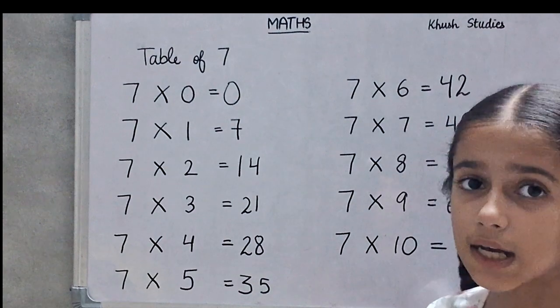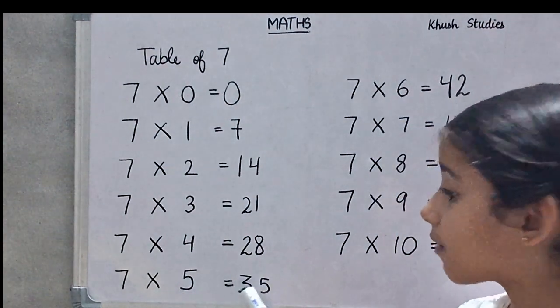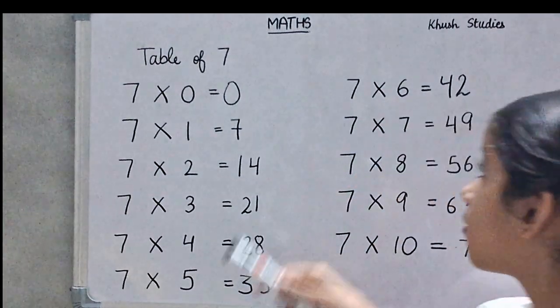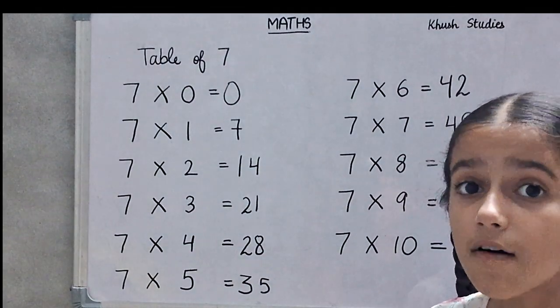7 fours are 28. 7 fours are 28. 7 fives are 35. 7 fives are 35. 7 six are 42. 7 six are 42.